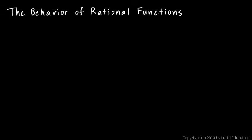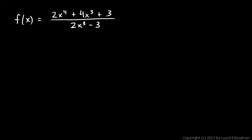We're still talking about the behavior of rational functions, and now we'll take a look at asymptotes that are neither vertical nor horizontal. Here's our first example: f is 2x to the fourth plus 4x cubed plus 3, over 2x cubed minus 3.